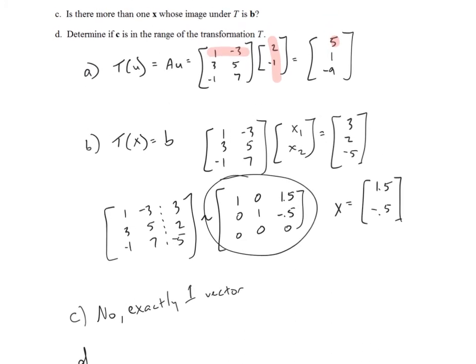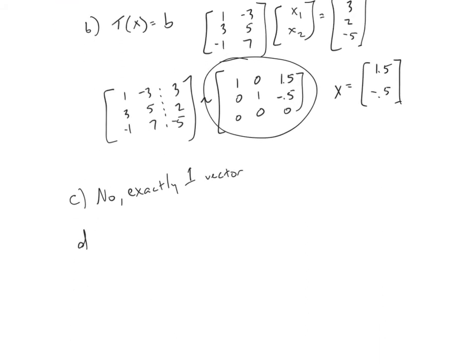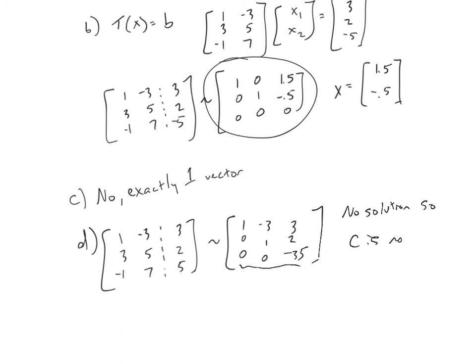And then part D, determine if the vector C is in the range of the transformation T. To do that, we're going to do the exact same thing. We're going to augment our matrix. Our matrix A, 1, negative 3, negative 1, 3, 5, and 7 with the given C vector, which was 3, 2, 5. Go through some row operations, which I will leave to you. You get 1, 0, 0, negative 3, 1, 0, and 3, 2, negative 35. And what does that mean? Because we have that bottom row with an inconsistent statement, this system has no solution, so C is not in the range. That's the end of that example.